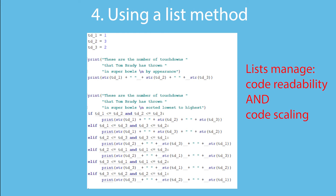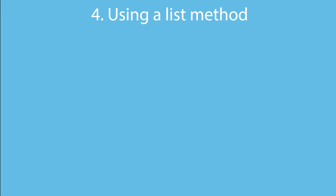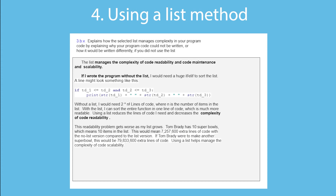My 3b5 answer uses sort, but you could use reverse, count, or many other methods — they are all only available because you're using a list. In the answer I talk about what the program looks like without a list, put an actual number on it (2 times n factorial), and discuss the scaling problems and how it gets worse as more items are added.